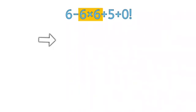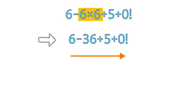Now the expression becomes 6 minus 36 plus 5 plus 0 factorial. Now we are left with minus and plus signs. Since both have the same priority, we perform the operation that appears first when moving from left to right. So 6 minus 36 gives minus 30.